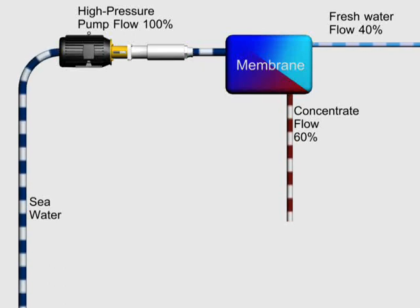When Seawater Reverse Osmosis, or SWRO, was first introduced, the membranes required very high pressure. Pumps were inefficient, and control systems consisted of throttle valves that wasted energy.